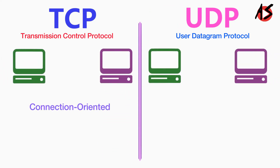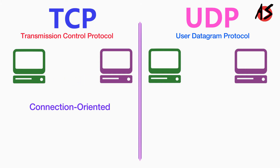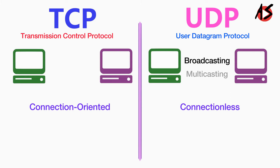First, TCP is a connection-oriented protocol. This means the communicating devices must establish a connection before transmitting data and should close the connection after transmitting the data. Whereas UDP is a connectionless protocol, so there is no overhead for opening, maintaining, and terminating a connection. UDP is efficient for broadcasting and multicasting.